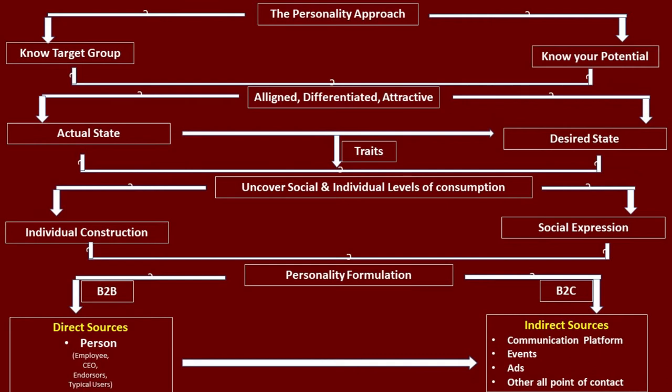Step 8 is about applying relevant sources and formulating a brand personality which is aligned to consumers' identity construction programs. Generally, in B2B businesses, direct sources of brand personality play a major role, like employees, CEO and other stakeholders of the company. Whereas in a B2C setting, communication platforms, advertisements, events and other points of contact play a major role. A brand personality is created through a cyclic interaction between the brand and the consumer.